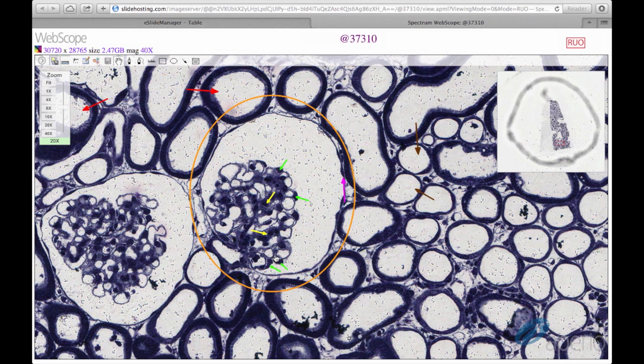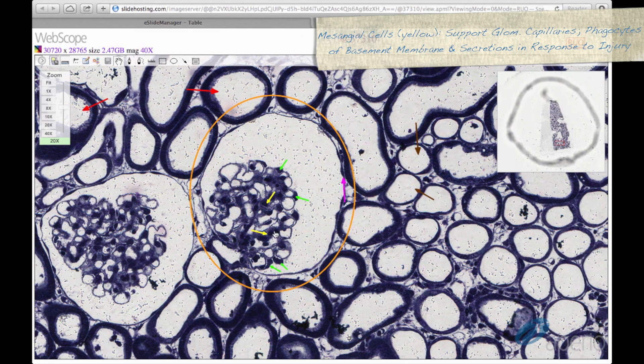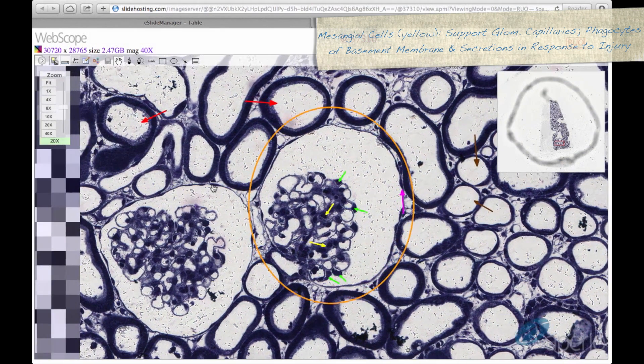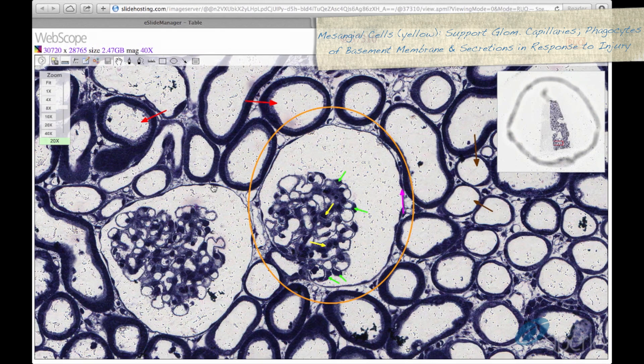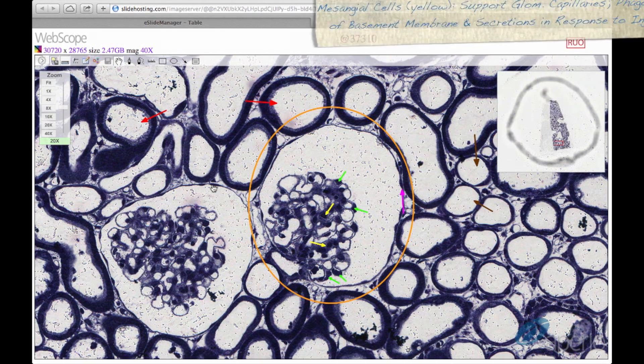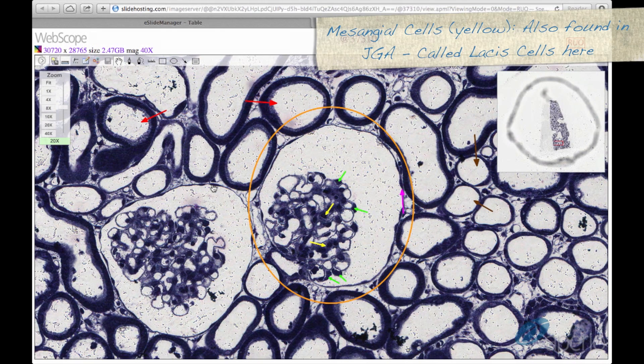We can also see mesangial cells, here at the yellow arrows. Mesangial cells are the supporting cells of the glomerulus. They function to support the glomerular capillaries, act as phagocytic cells to keep the glomerular basement membrane clean, and secrete molecules in response to injury. Mesangial cells can also be found in the juxtaglomerular apparatus, where they are known as lacis cells.